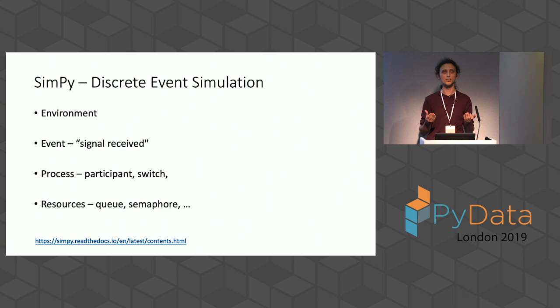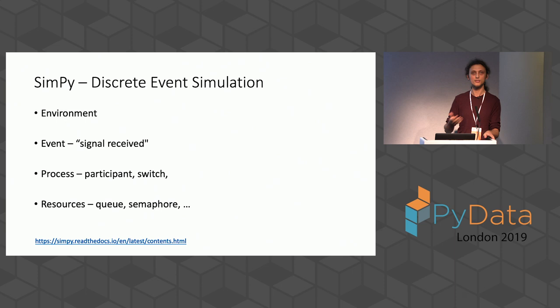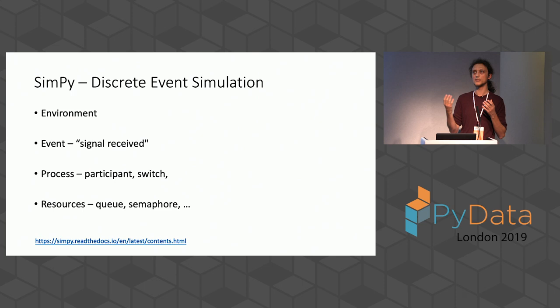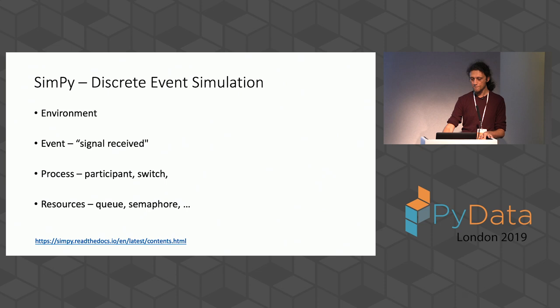Processes are generators in SimPy. A while-loop that never ends represents an ongoing physical process, while a finite generator represents a one-off action. Resources are convenience features that help you model queuing effects, congestion, and waiting for semaphores without explicitly coding them. SimPy uses the same interface for waiting on an event, a process finishing, or a resource being released — which is quite convenient.